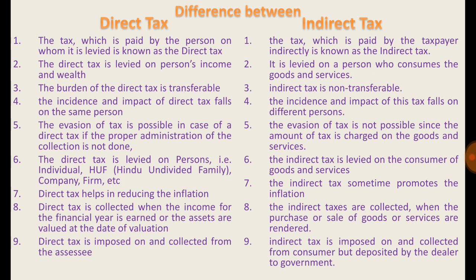Lastly, direct tax is imposed and collected from the taxpayer themselves. But in indirect taxes it is imposed and collected from the consumer, yet it is deposited by the dealer to the government. In direct taxes, the liability to pay tax is on the same person who is liable to pay. In indirect taxes, the liability to pay to government is not on the person liable to pay — that is, the consumer — but on a different person who is responsible for collection, for example the seller, who must deposit that amount to government.